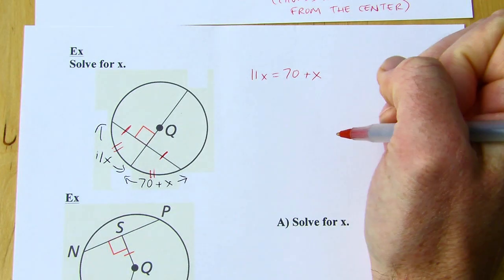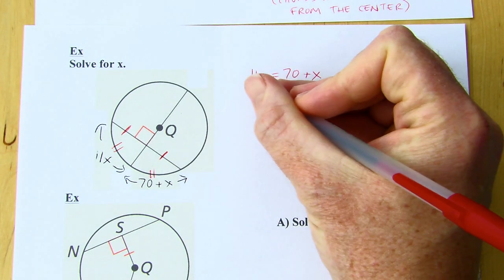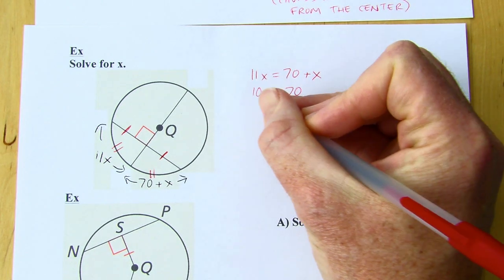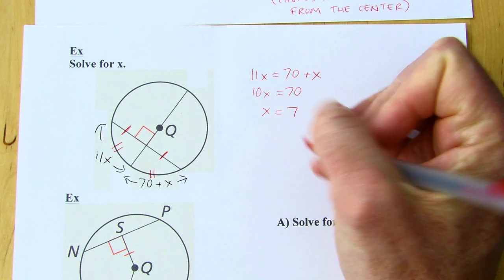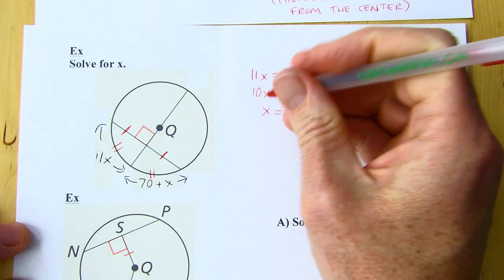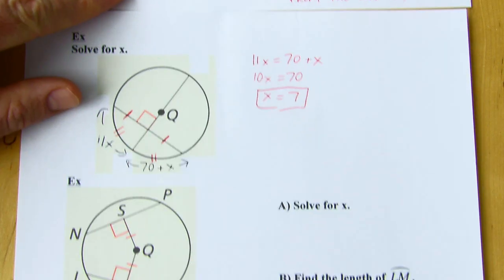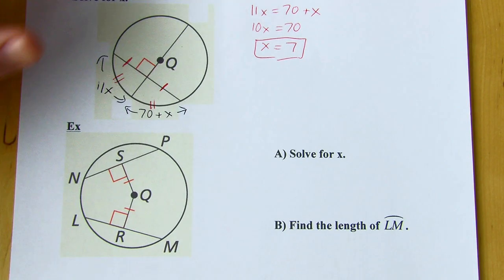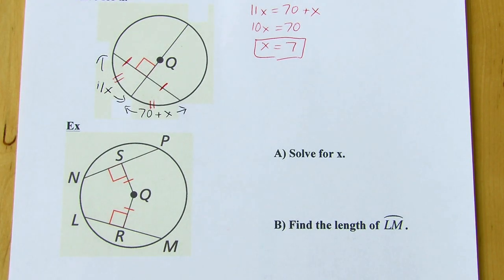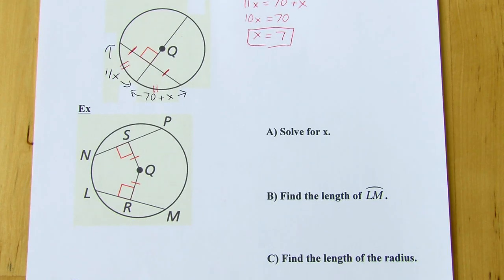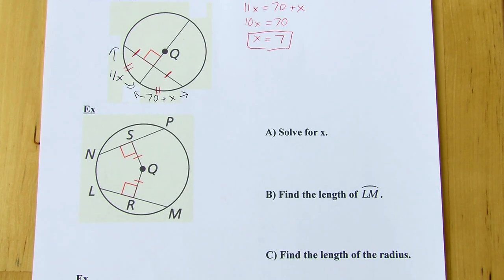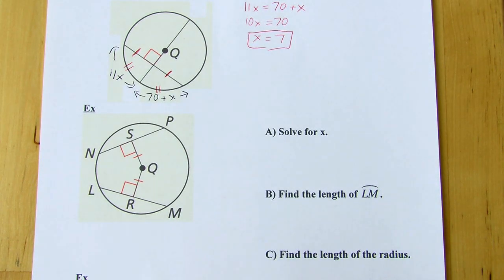Solving 11x = 70 + x: subtract x from both sides to get 10x = 70, then divide by 10 to get x = 7. With these theorems, it's not critical to memorize their names as long as you know how to use them. Most problems involve solving for something, so applying them is what matters. We won't be doing proofs with these.